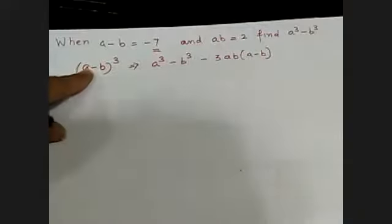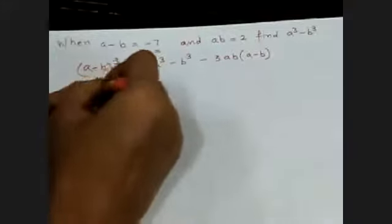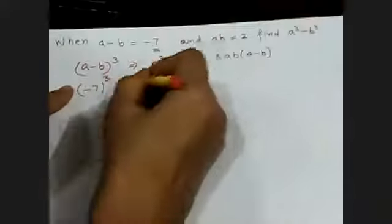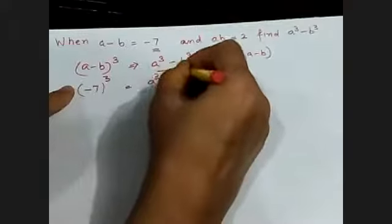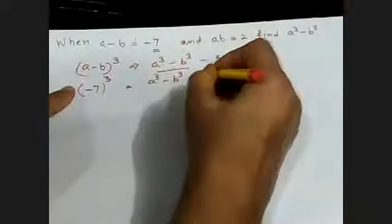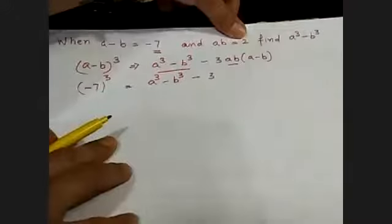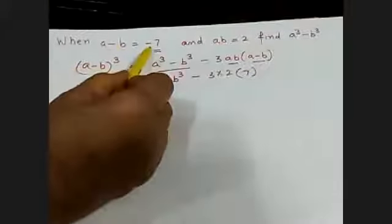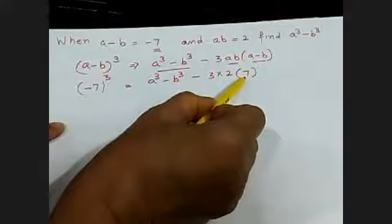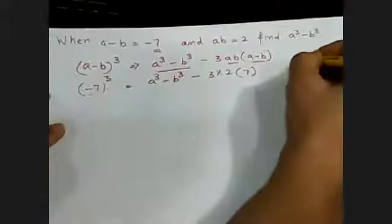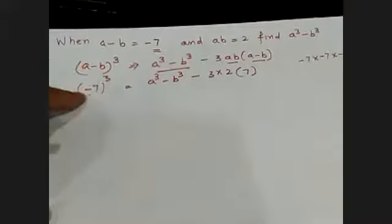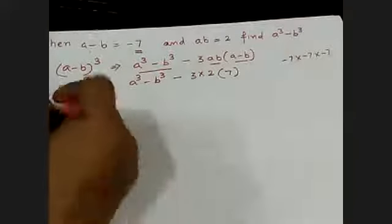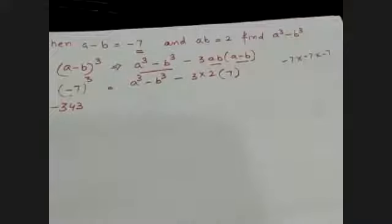You will put the value of A minus B, which equals minus 7, so you put minus 7 whole cube on the left side. A cube minus B cube is what we need to find, so leave it. Then minus 3AB — put 2 for AB — and in the bracket A minus B, put minus 7. Minus 7 whole cube equals minus 7 times minus 7 times minus 7, which is minus 343.